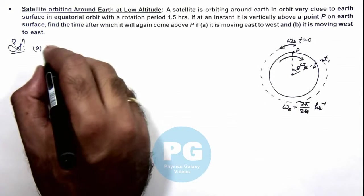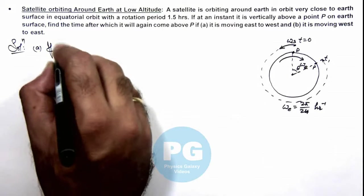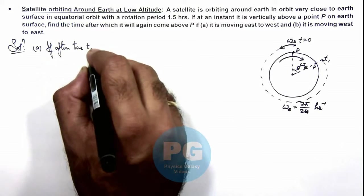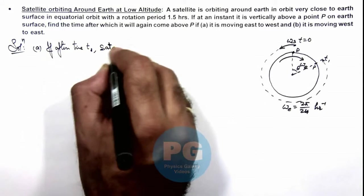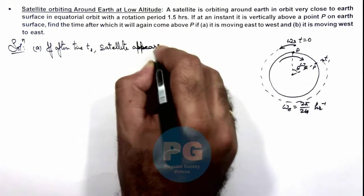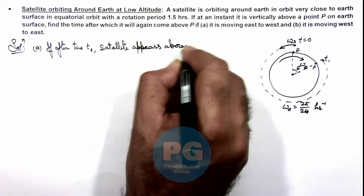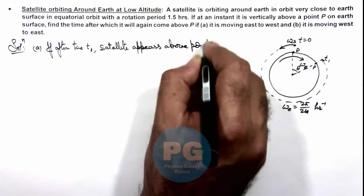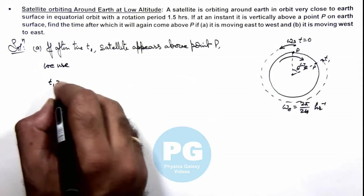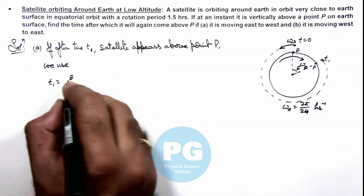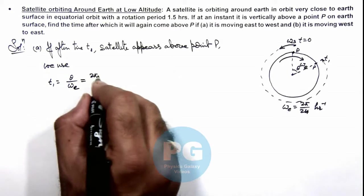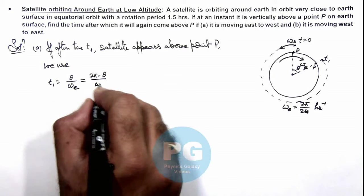So we can write if after time t₁, satellite appears above point P. Here we use t₁ = θ/ωₑ, and the same time is equal to (2π-θ)/ωₛ.